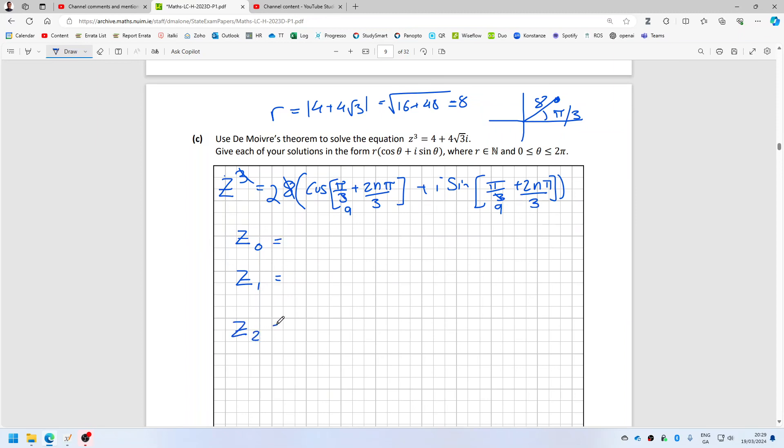So let's see, z_0 equals 2 cos pi over 9 plus 2 times 0 times pi over 3, which is 2 times cos pi over 9 plus i sine pi over 9.